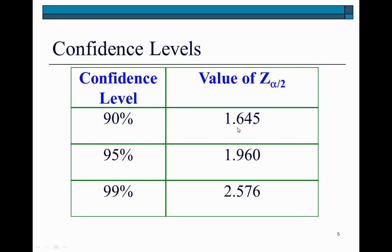And that's what you find right here. So in the same way, you can also find the z value of 2.576 for 99% confidence level.